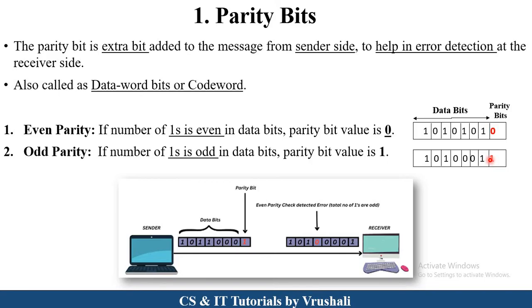So this is called a parity bit. When the sender sends the message, the receiver checks how many ones are present according to the parity bit. If the parity bit is 0, the receiver counts ones — 1, 2, 3, 4 — meaning the correct message was received with no error. In odd parity, when the receiver gets a message with parity bit 1, they verify the odd number of ones is present, confirming no error. This is how parity bits help identify errors.